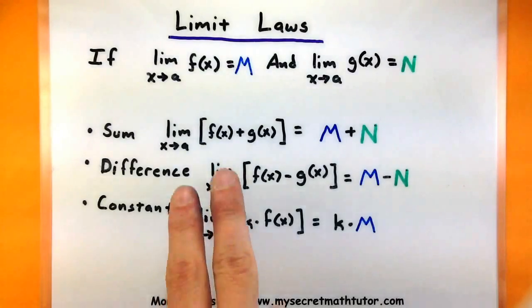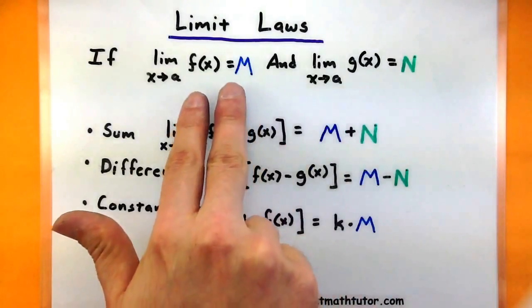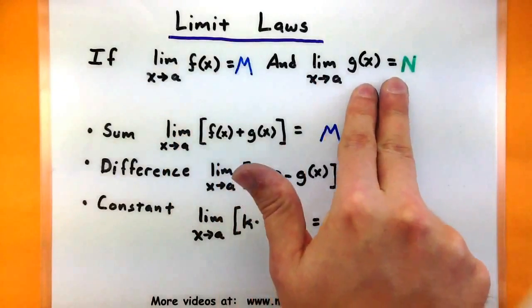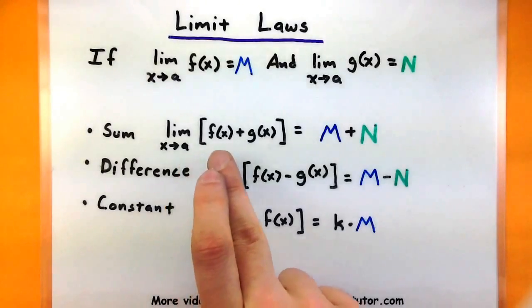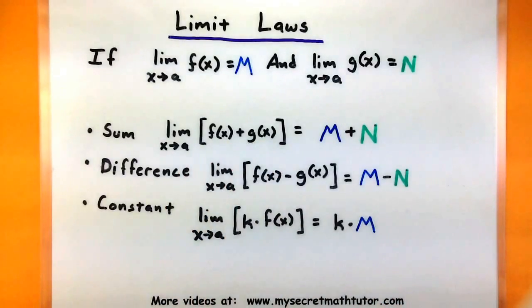So for these first few, I have two functions, f and g, and I know the limit of f and I know the limit of g. According to my first law here, it says that if I'm looking at the limit of adding these two functions together, that I simply take their corresponding limits and I add those together.